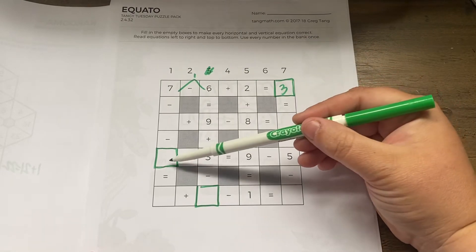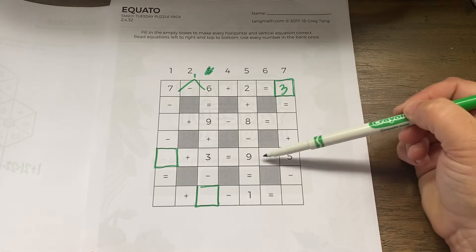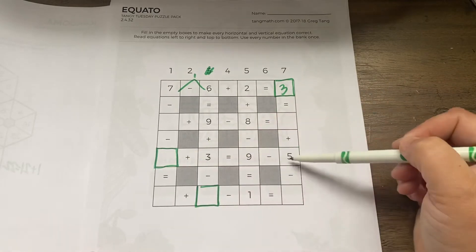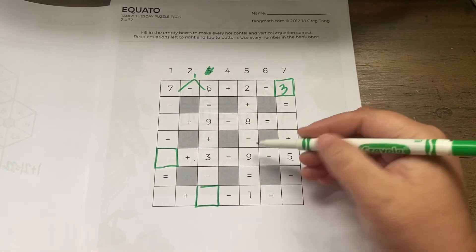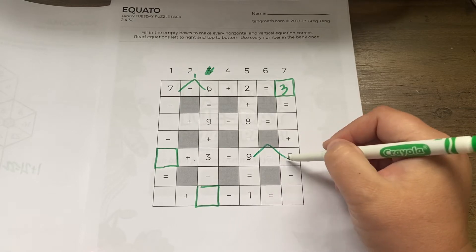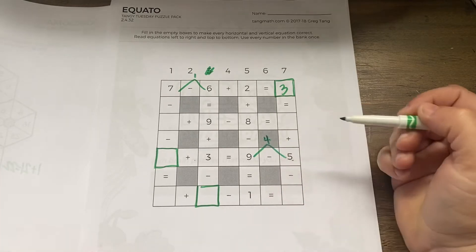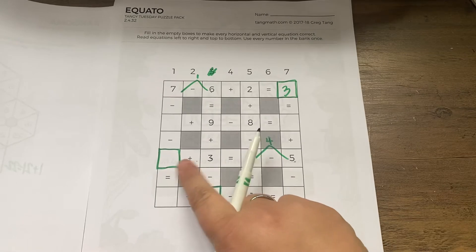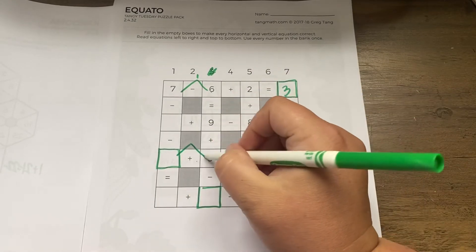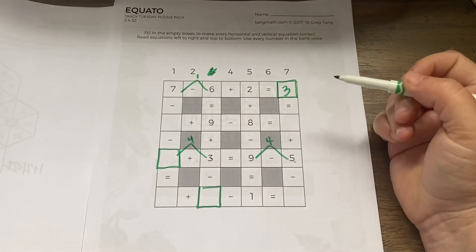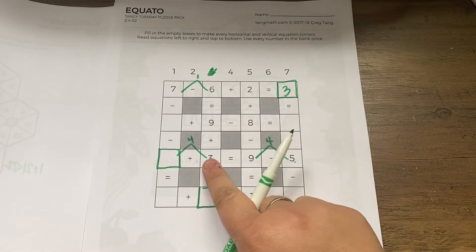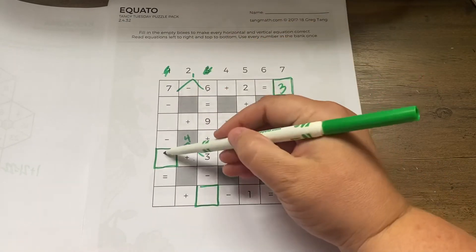This one, blank plus 3 equals 9 minus 5. So I know that the ones on this side have to be the same as this side. So 9 minus 5 is 4. So this has to be 4. Blank plus 3 equals 4. And I know that 1 plus 3 equals 4. So that one has to be 1.